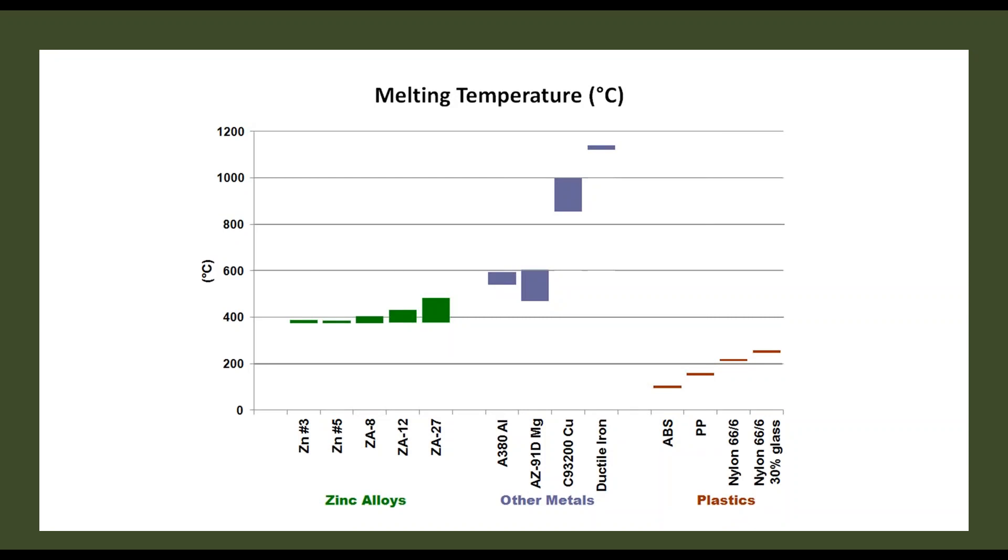In this bar graph, we see a range of temperatures representing the spread or slush range between the alloy's liquidus, or the temperature at which the alloy is completely liquid, and its solidus, the temperature at which the alloy is completely solid. The Zamak alloys have a liquidus temperature of approximately 390 Celsius or 734 Fahrenheit.